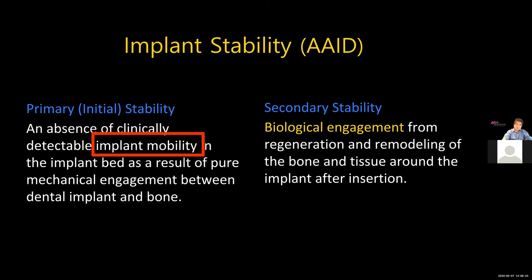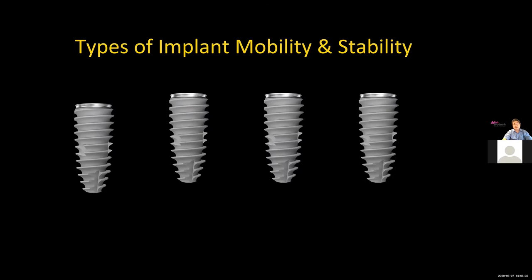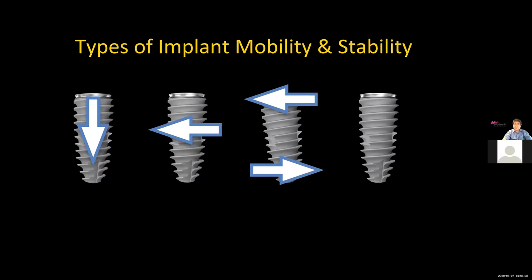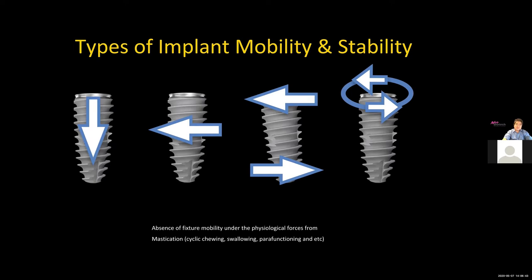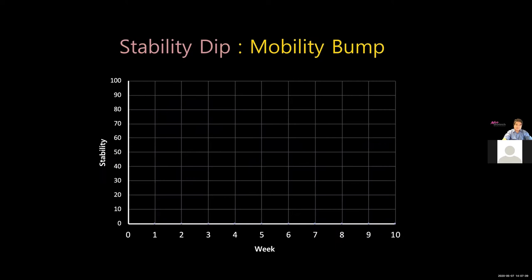In clinical situations we can face vertical mobility, lateral mobility, tilting mobility, and rotational mobility. My humble definition for implant stability is the absence of fixture mobility under physiological force from mastication. In other words, once I place an implant and put a crown on it and the patient begins to chew, I do not want to see any mobility. I want to achieve and maintain that stability — that's the goal.